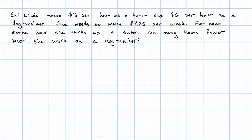Now, we can set up an equation relating these quantities. What are our variables? Let's say T is her hours as a tutor and W is her hours as a dog walker. How are we going to get our equation? The amount she makes as a tutor plus the amount she makes as a dog walker will give us her total income.